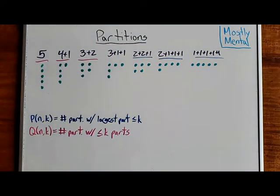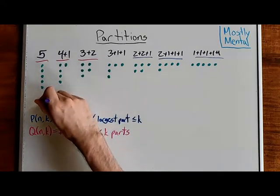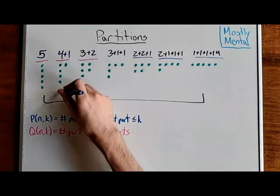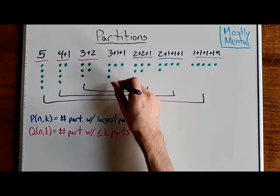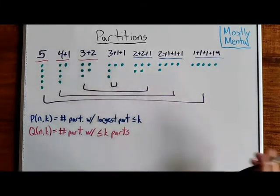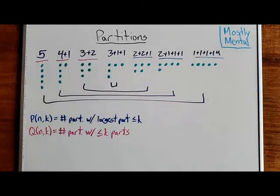The magic happens when we take these diagrams and swap the rows and columns. That lets us pair up partitions. So, these are paired, these are paired, these are paired, and this one actually gets paired with itself. Then, any partition with largest part k is matched with the partition with k parts, and vice versa.